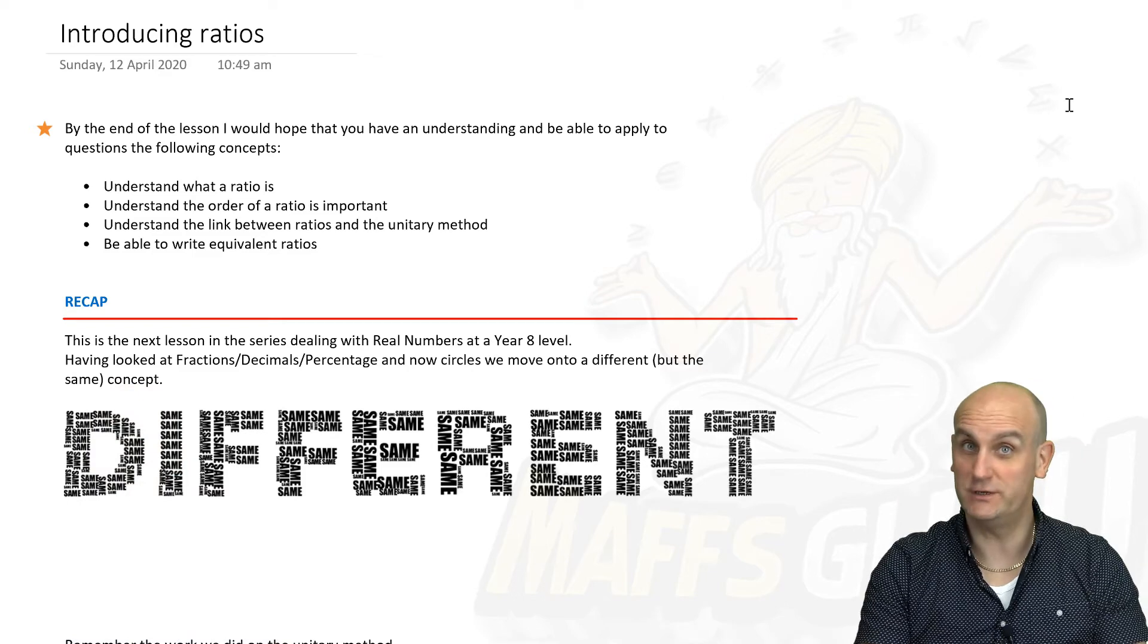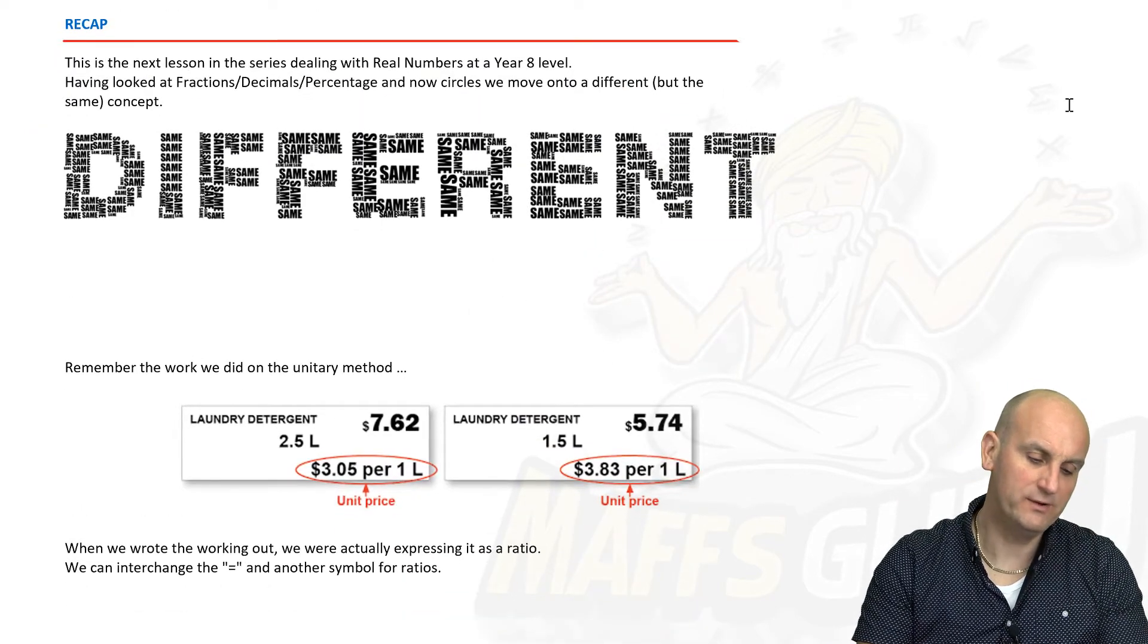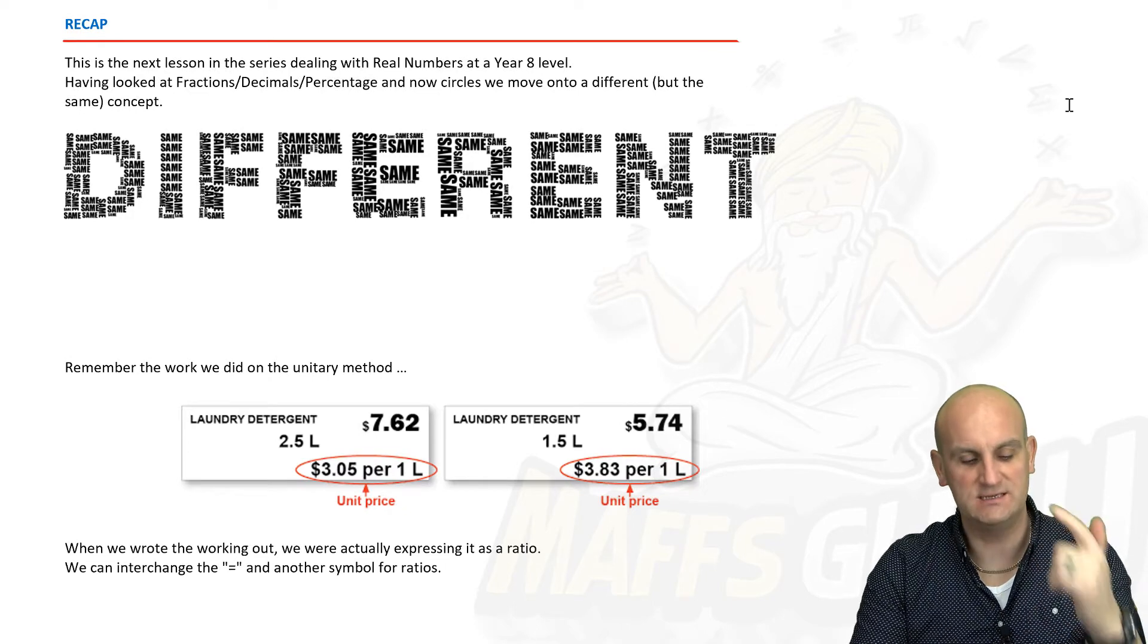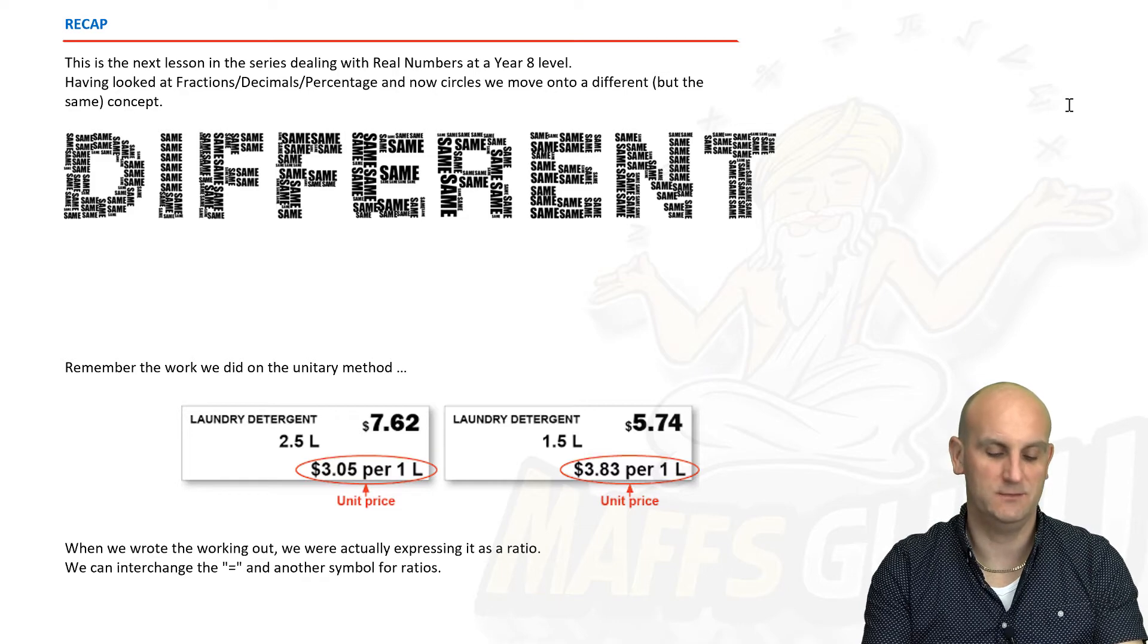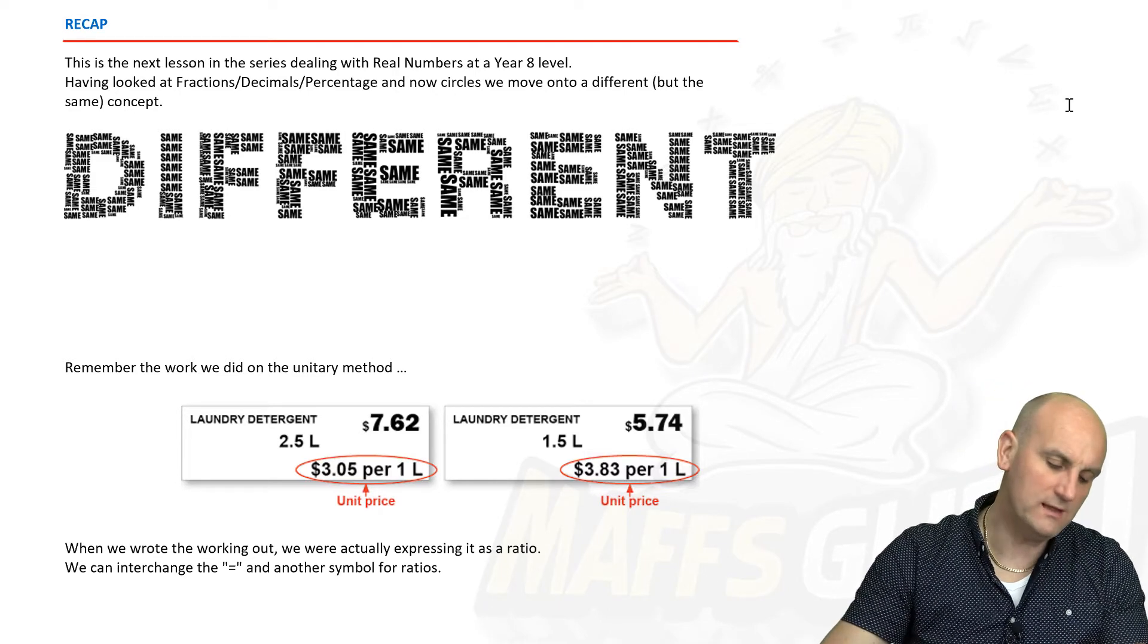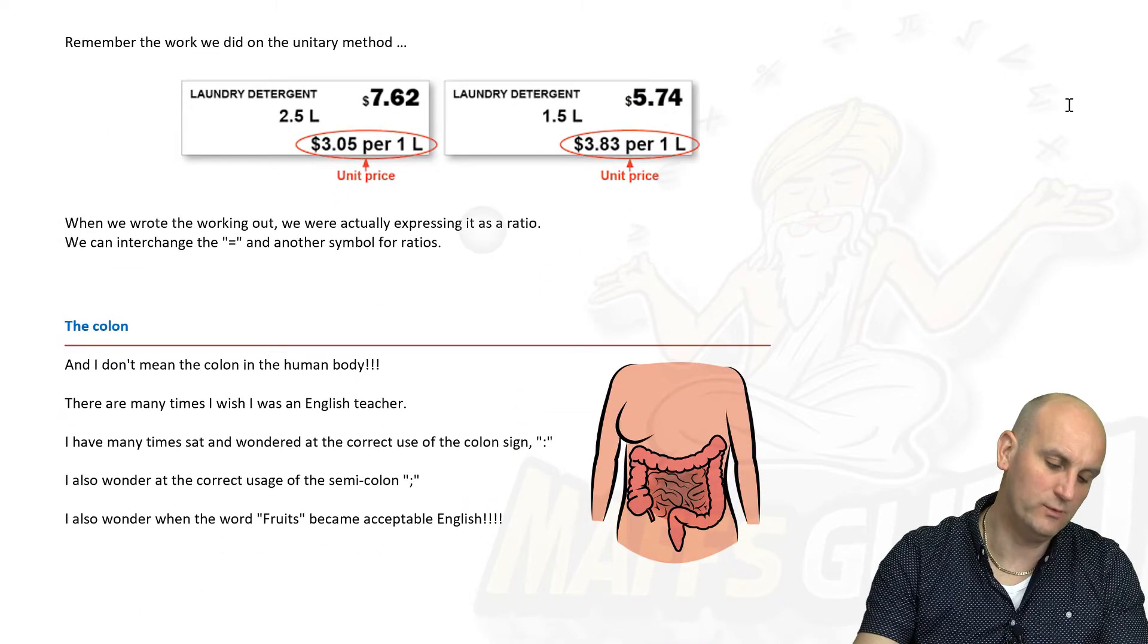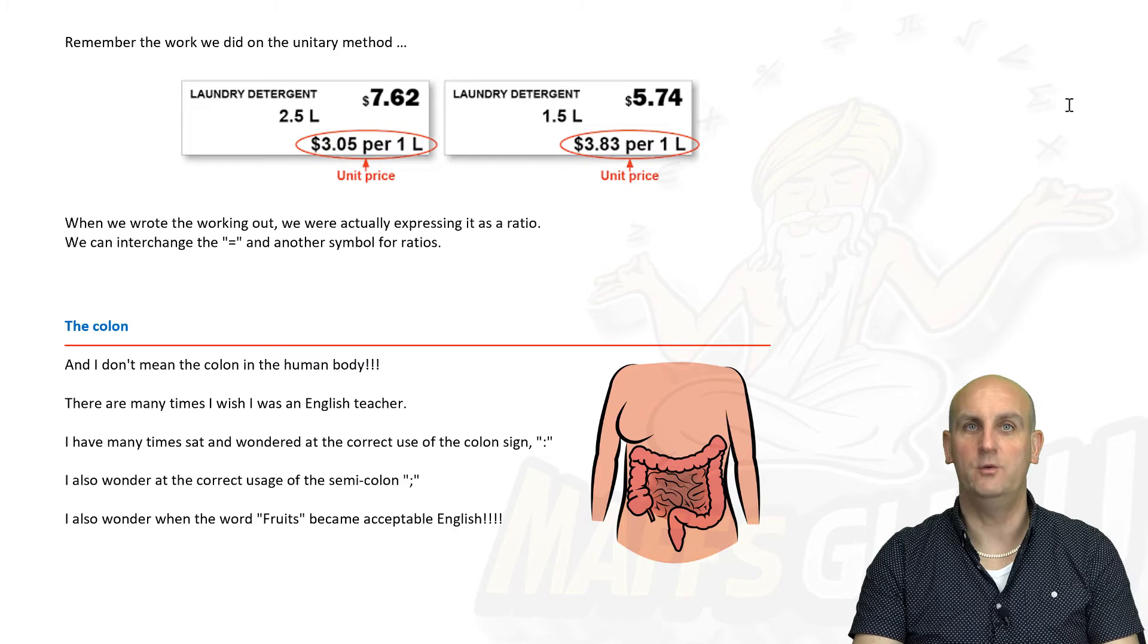Okay, so introducing ratios. Now basically I can recap previous lessons because we've done fractions, decimals, percentages, we've done some circles, but basically we're going to move back into what I've said here: same same but different. Do you remember if you've watched the video on the unitary method?